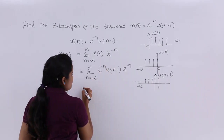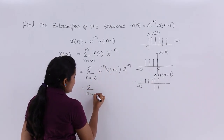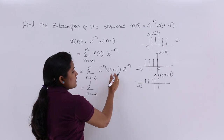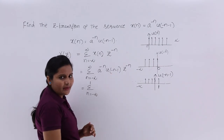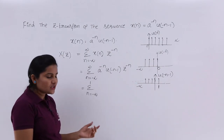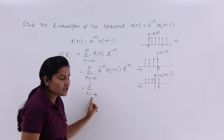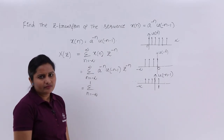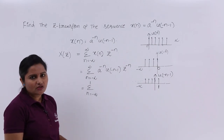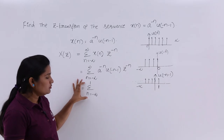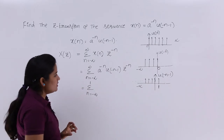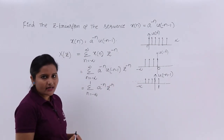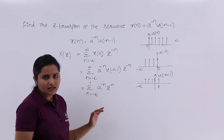This unit step signal region changes the summation limits to: n equals minus infinity to 1. Now, from minus infinity to 1, the unit step function value equals 1. So there is no need to write the unit step function anymore — we can neglect multiplying by 1, since its effect is already captured in the changed summation limits.